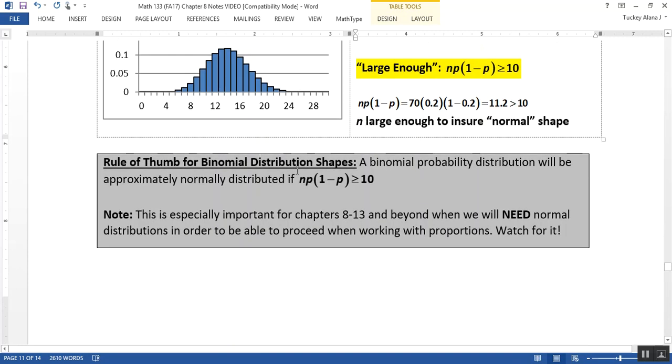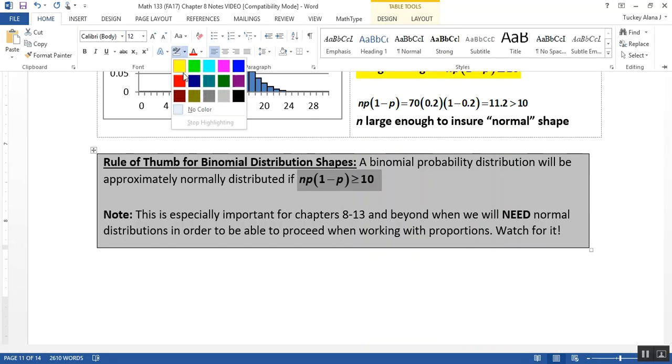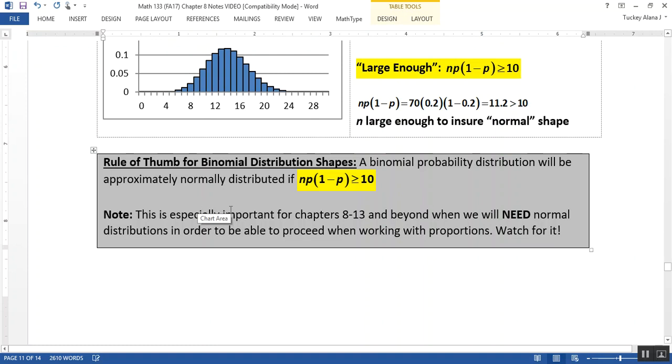This is the rule of thumb. The rule of thumb says that if n is large enough so that n times p times (1-p) is greater than 10, then you have a large enough sample to guarantee normal. We need that for chapters 8, 9, 10, 11, 12. We will use that fact a lot.